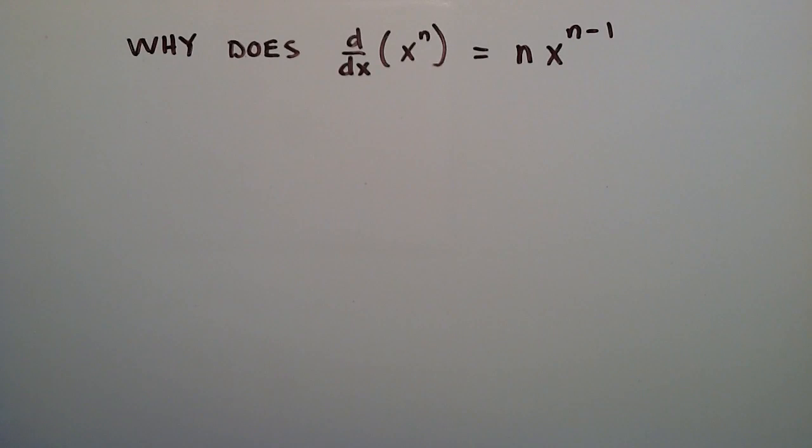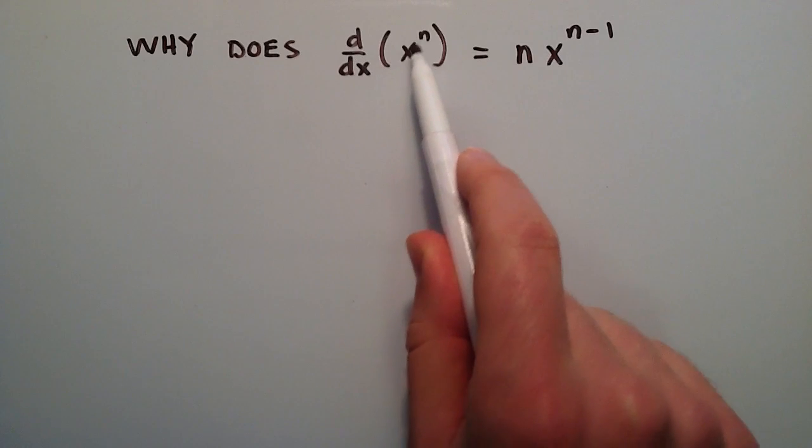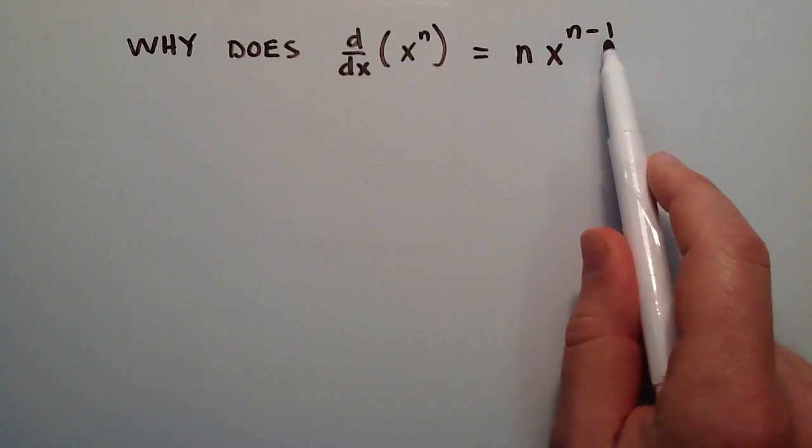Hey everybody, this is Paul. So I had somebody ask me recently, why does the derivative of x to the n equal n times x to the n minus 1?